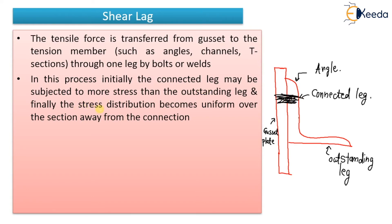The stress distribution becomes uniform over the section away from the connection, and thus one part lags behind the other. This is referred to as shear lag. There will be more stresses over here and less stresses over here, so one part will lag behind the other, and that is shear lag.